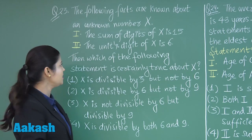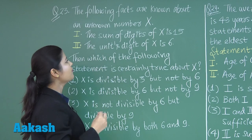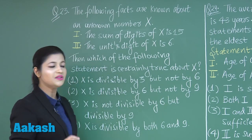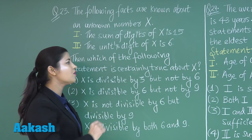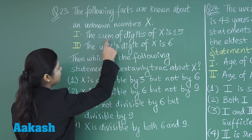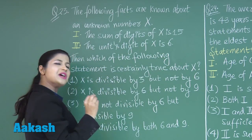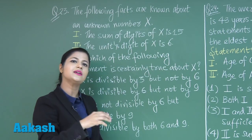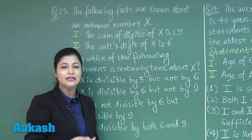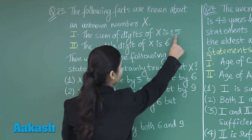In this question, you have two statements that tell you about x, and you have to match them against the four options. The first statement says the sum of the digits of x is 15. You know that if the sum of the digits of a number is divisible by 3, then the number is also divisible by 3.